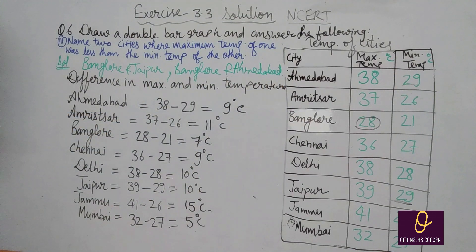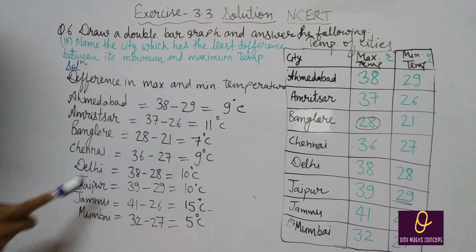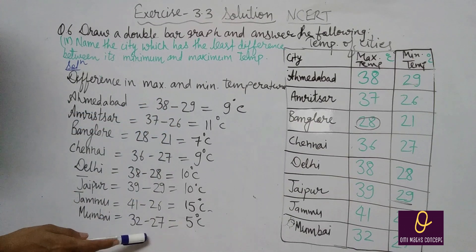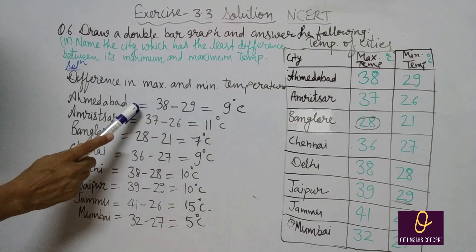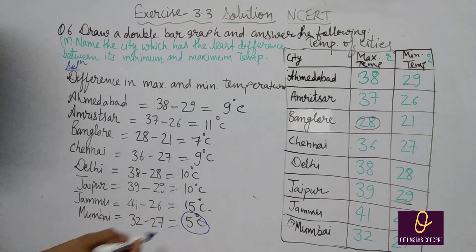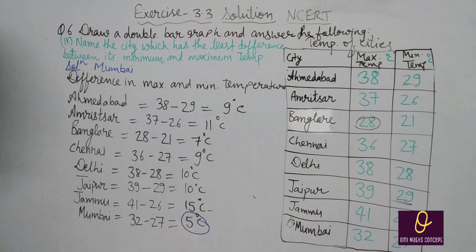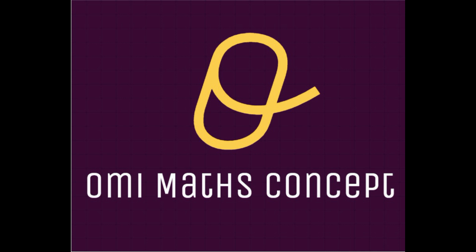यह सबसे important part है — इसको समझना होता है. Next part: name the city which has the least difference between minimum and maximum temperature. Minimum और maximum temperature के बीच में सबसे कम difference Mumbai का है. Mumbai — this is your answer. Thank you.